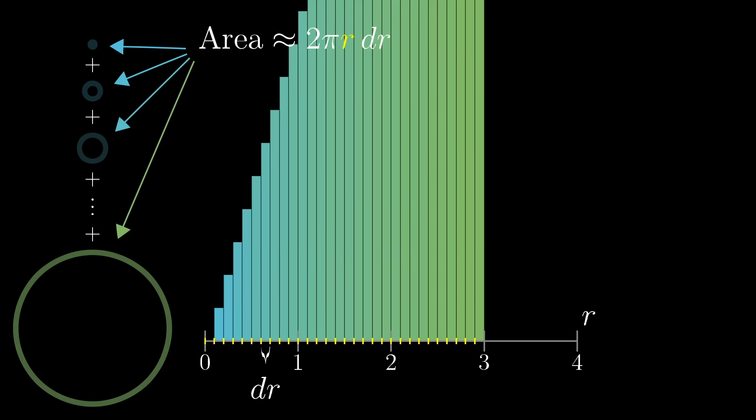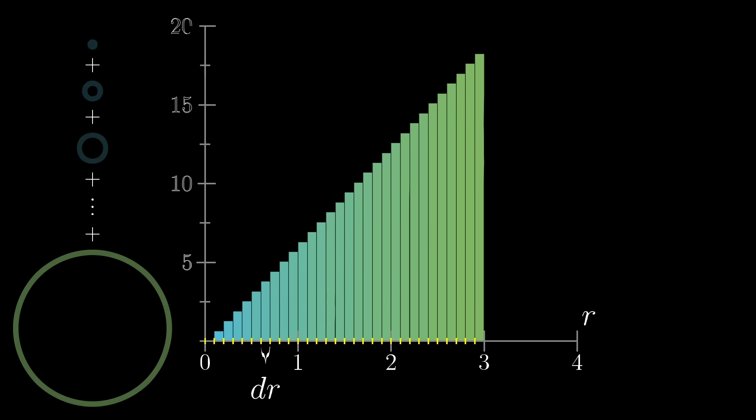Pictures like this, 2 pi r can actually get kind of tall for the screen. I mean, 2 pi times 3 is around 19, so let's just throw up a y axis that's scaled a little differently so that we can actually fit all of these rectangles on the screen. A nice way to think about this setup is to draw the graph of 2 pi r, which is a straight line that has a slope 2 pi. Each of these rectangles extends up to the point where it just barely touches that graph.